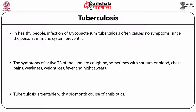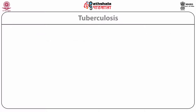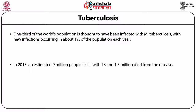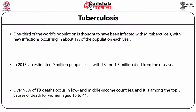Tuberculosis is treatable with a 6-month course of antibiotics. One third of the world's population is thought to have been infected with M. tuberculosis, with new infections occurring in about 1% of the population each year. In 2013, an estimated 9 million people fell ill with TB and 1.5 million died from the disease. Over 95% of TB deaths occur in low and middle income countries, and it is among the top 5 causes of death for women aged 15 to 44.